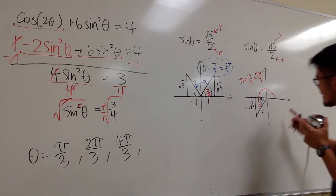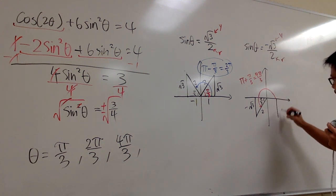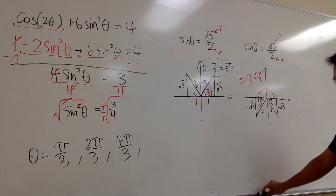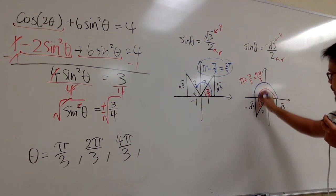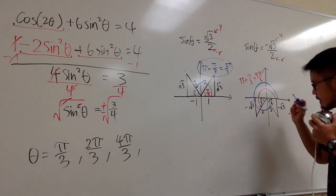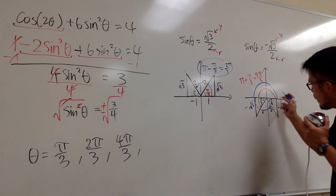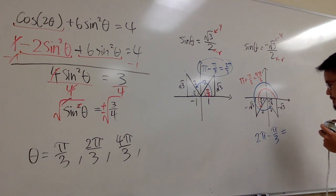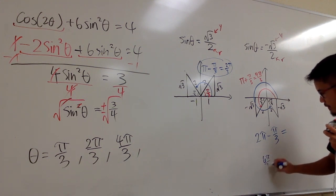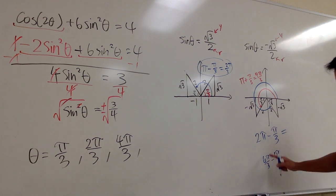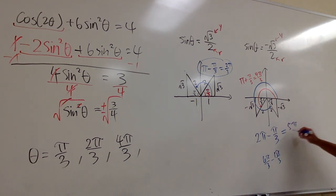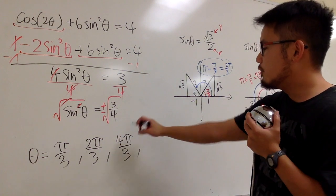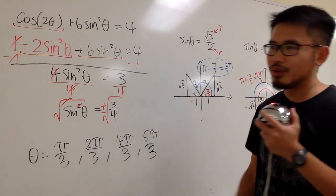Do we have one more? Yes, because negative square root of 3 can also be on the other side going below the x-axis. The reference angle is still pi over 3, but this time we go from the positive x-axis all the way around — the whole circle is 2 pi — and subtract pi over 3. So 2 pi minus pi over 3 is 6 pi over 3 minus 1 pi over 3, which equals 5 pi over 3. Our four answers are: pi over 3, 2 pi over 3, 4 pi over 3, and 5 pi over 3.